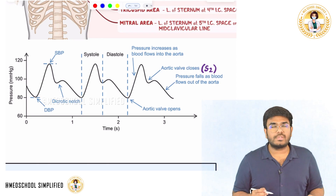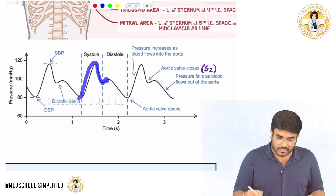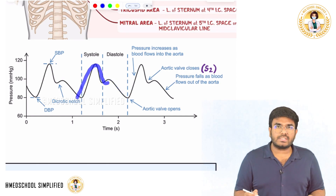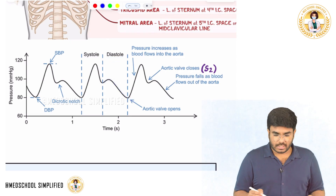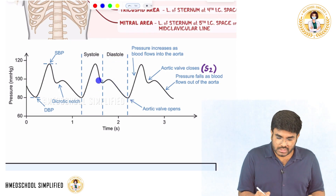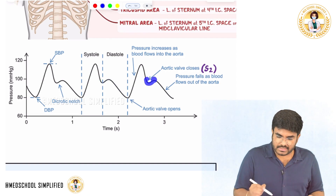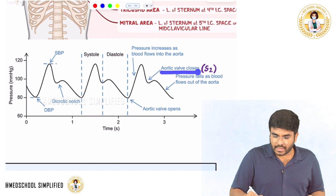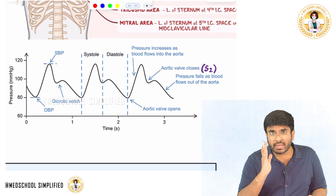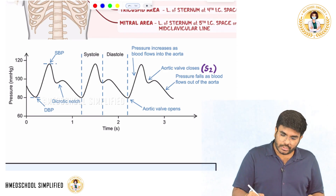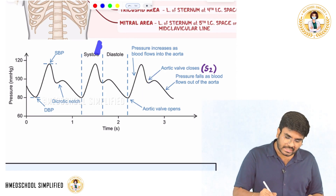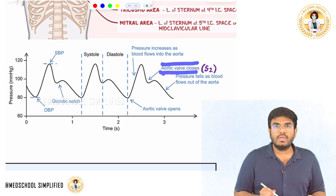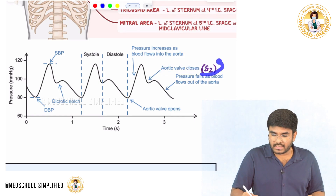This is how the waveform is going to be in your carotids. Pressure increases during systole, it decreases during diastole. The exact notch at that point — where the aortic valve closes — is called the dicrotic notch. During the dicrotic notch, the aortic valve closes. Which heart sound is heard during this dicrotic notch? The S2 heart sound, because closure of the aortic semilunar valve causes the S2 heart sound.